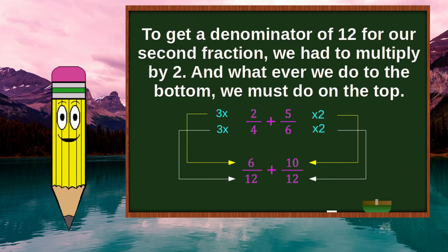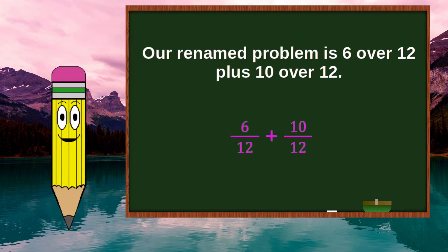To get a denominator of 12 for our second fraction, we had to multiply by 2. And whatever we do to the bottom, we must do on the top.